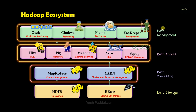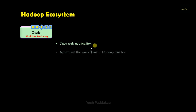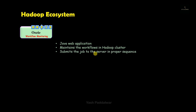Now let's move on to the data management section. The first component is Oozie, which is used for workflow monitoring. It is entirely written in Java and is a web application used for managing workflows in the Hadoop cluster. Workflows in Oozie are defined in a directed acyclic graph. Oozie submits jobs to the server in the proper sequence — the same sequence in which it receives the jobs.